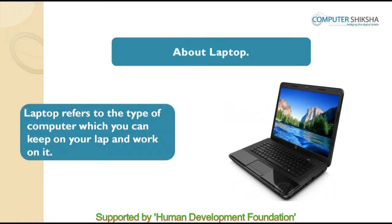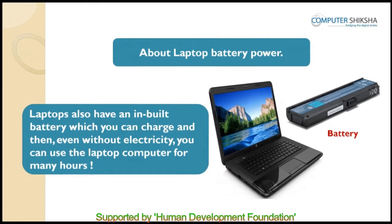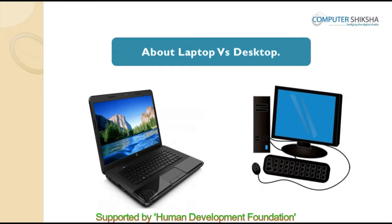The second type is the laptop computer. The word laptop refers to the type of computer which you can keep on your lap and work on. In a laptop computer, all of its components — keyboard, mouse, CPU, and monitor — form one single unit. Laptops also have an inbuilt battery which you can charge and then, even without electricity, you can use the laptop for many hours. Since the laptop is smaller than the desktop, we can carry it from one place to another easily.